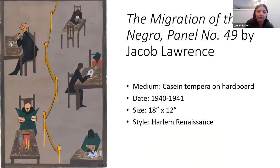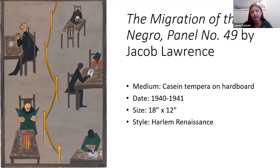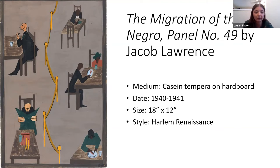The next piece is 'The Migration of the Negro, Panel Number 49' by Jacob Lawrence. He used casein tempera on hardboard to create this. It was made in 1940 to 1941, and it's actually part of a series of a hundred different panels. The size is 18 inches by 12 inches, made during the Harlem Renaissance with that Harlem Renaissance style.